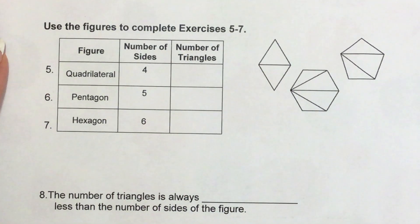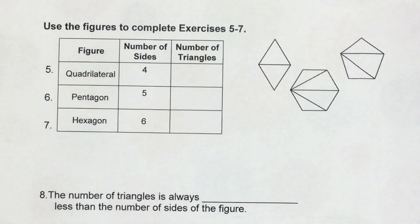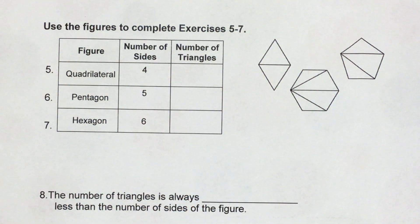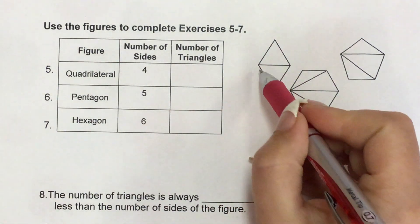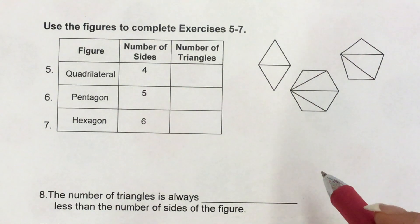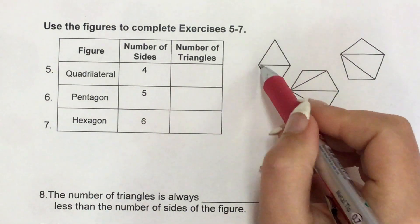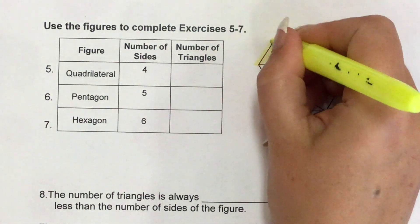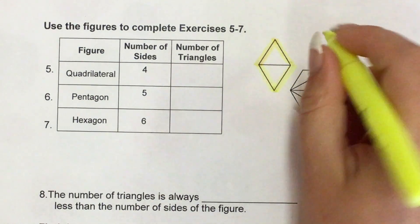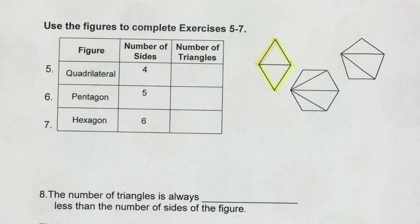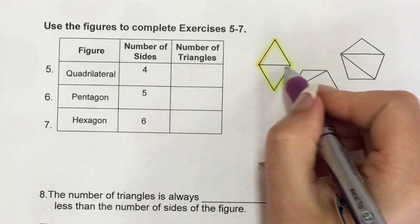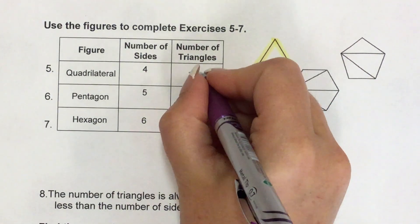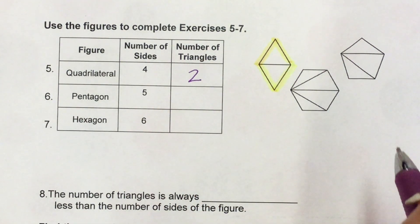So what we have over here are some figures and we're going to fill in this table. When we look at a quadrilateral, a quadrilateral is a four-sided figure — 1, 2, 3, 4 sides. We're going to see how many triangles we can make in this four-sided figure. There's one here and there's another one here, so the number of triangles would be 2.